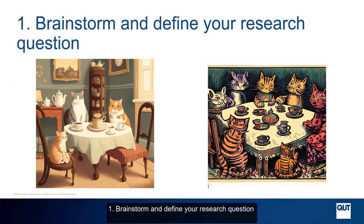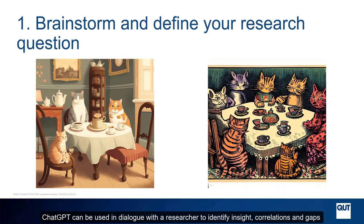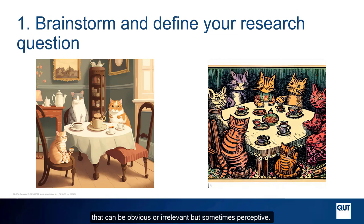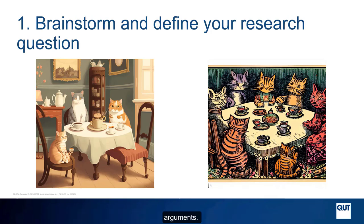1. Brainstorm and define your research question. ChatGPT can be used in dialogue with a researcher to identify insights, correlations and gaps. They can be obvious or irrelevant, but sometimes perceptive. Given a discipline, ChatGPT can quickly define possible research questions or counter-arguments. This is where a well-defined prompt can be useful.